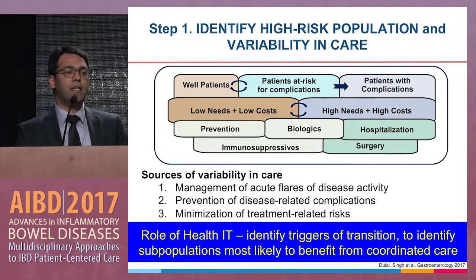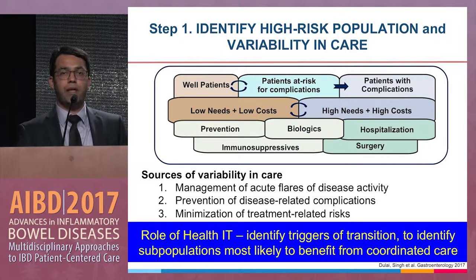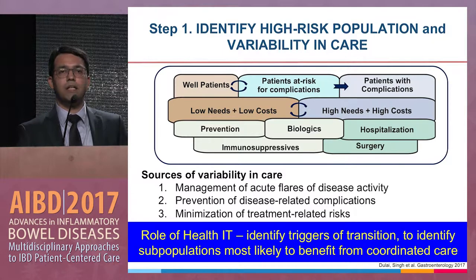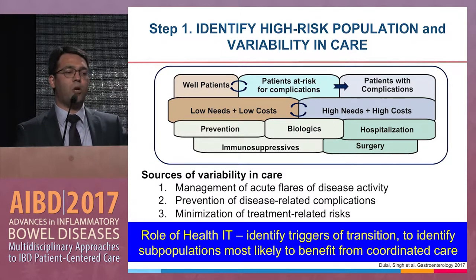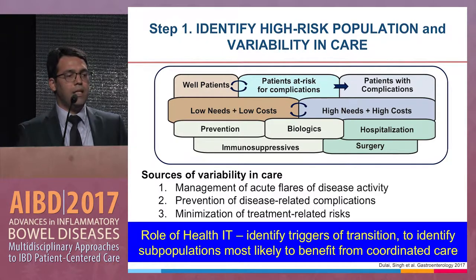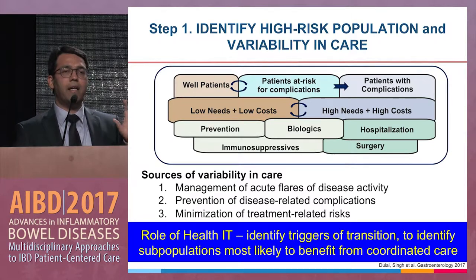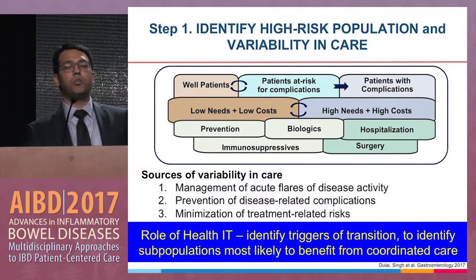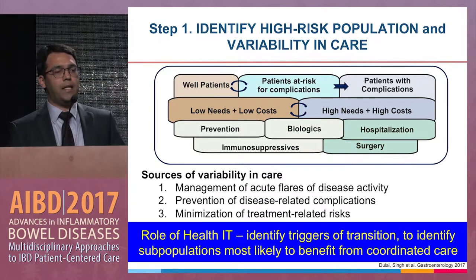The main source of variability in care is managing acute flares of disease activity while recognizing underlying disease severity to prevent disease-related complications. This needs to be in the proper context to minimize treatment-related risks. The role of health IT here is to identify triggers of transition and to identify subpopulations most likely to benefit from coordinated care.